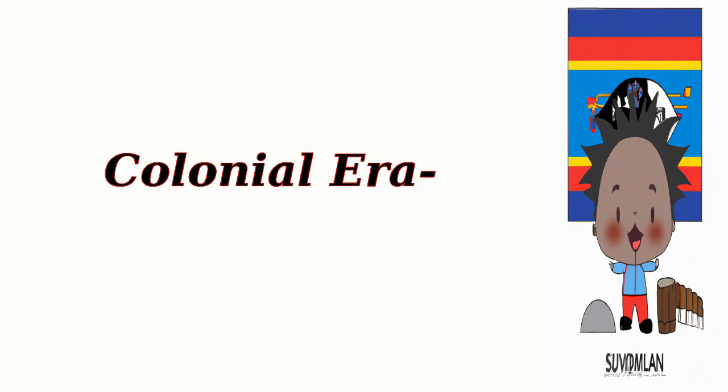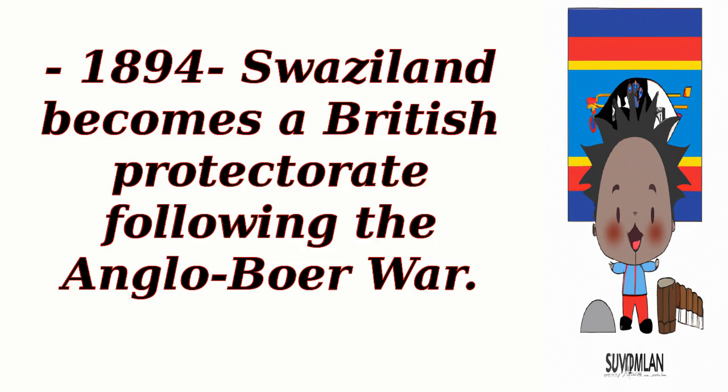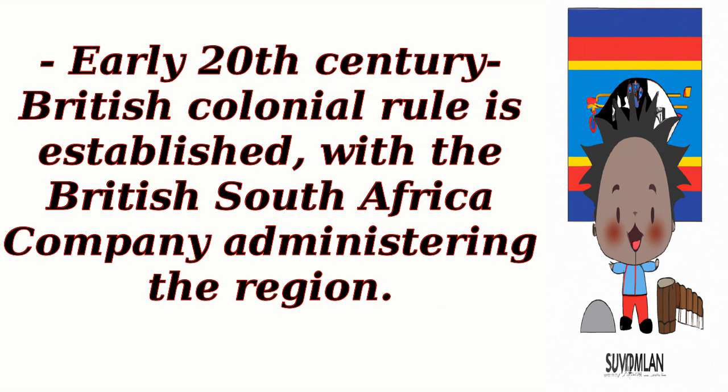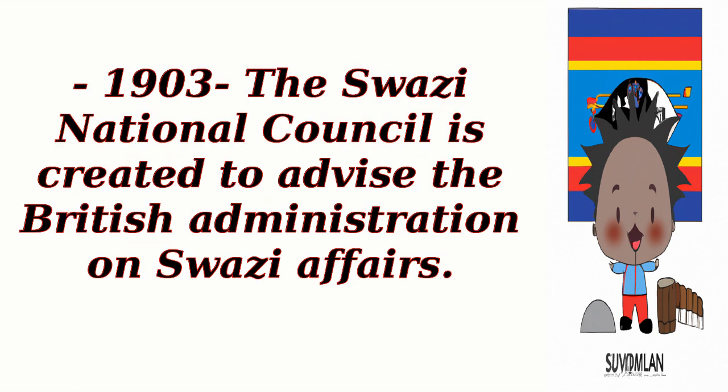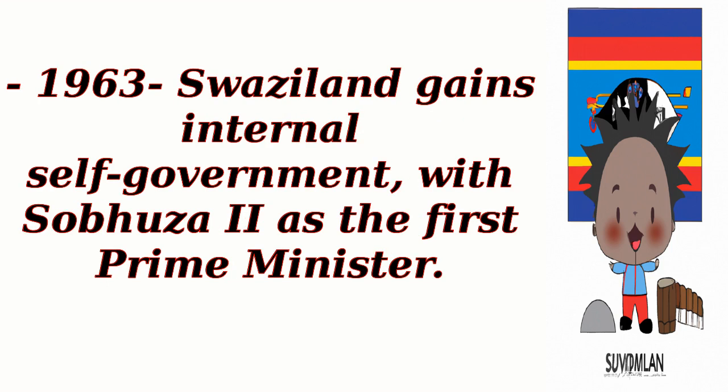Colonial era: In 1894, Swaziland became a British protectorate following the Anglo-Boer War. In the early 20th century, British colonial rule was established, with the British South Africa Company administering the region. In 1903, the Swazi National Council was created to advise the British administration on Swazi affairs. In 1963, Swaziland gained internal self-government, with Sobhuza II as the first prime minister.